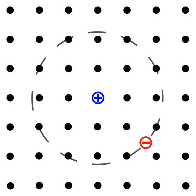An exciton is a bound state of an electron and an electron hole which are attracted to each other by the electrostatic Coulomb force. It is an electrically neutral quasiparticle that exists in insulators, semiconductors, and in some liquids.